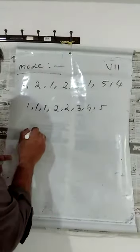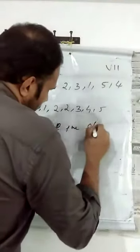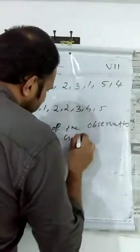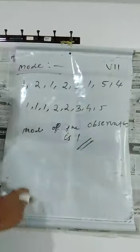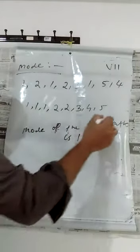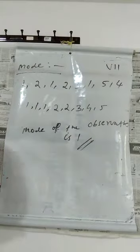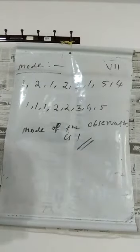The mode of the observation is one. One is the mode of the observation because one occurs three times.